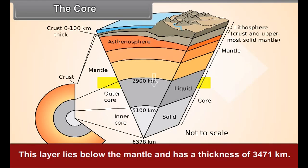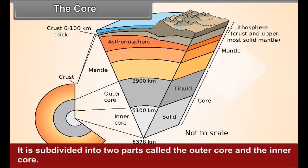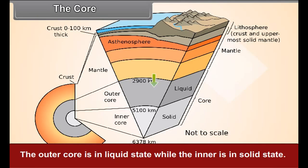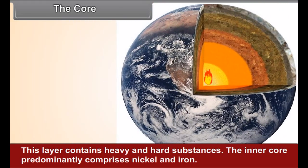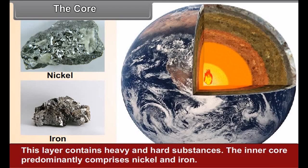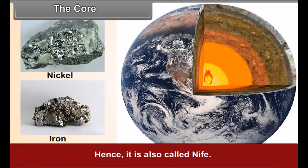The core. This layer lies below the mantle and has a thickness of 3,471 kilometers. It is subdivided into two parts called the outer core and the inner core. The outer core is in liquid state while the inner core is in solid state. This layer contains heavy and hard substances. The inner core predominantly comprises nickel and iron, hence it is also called NIFE.